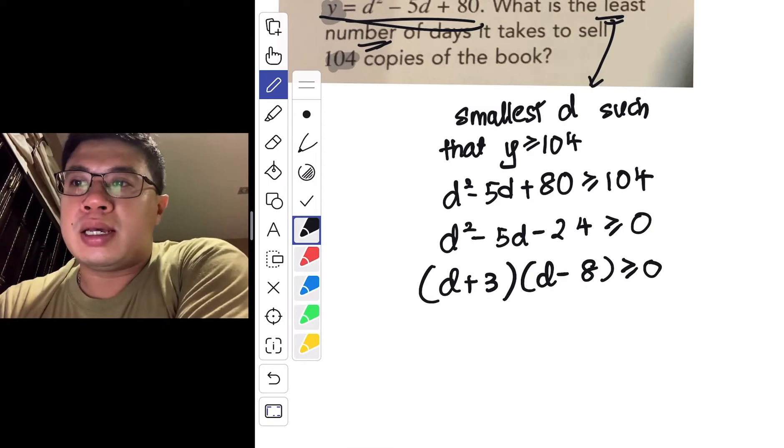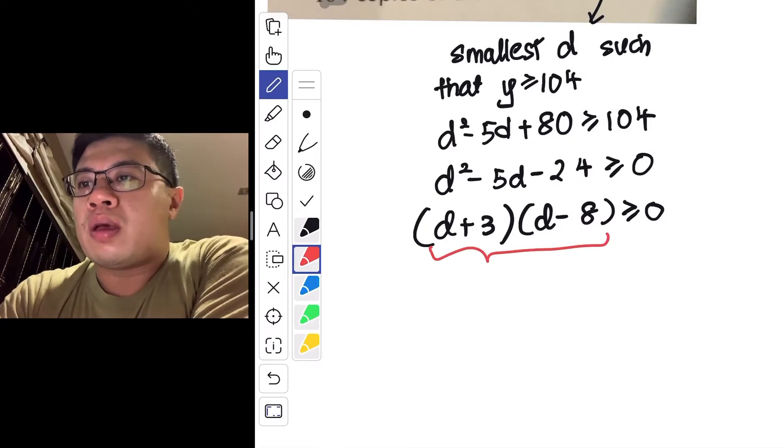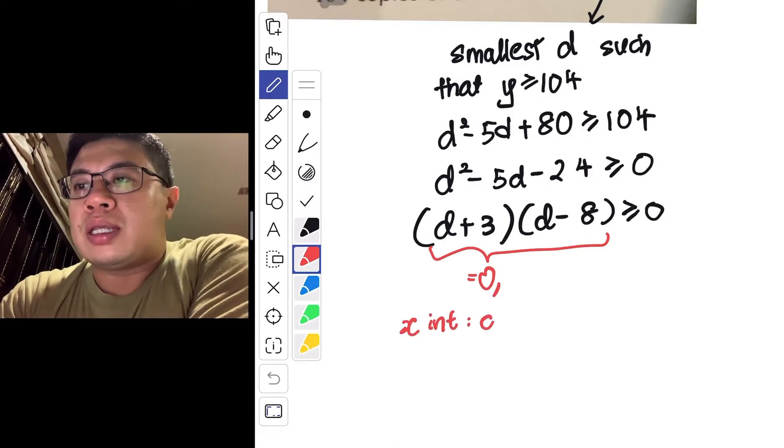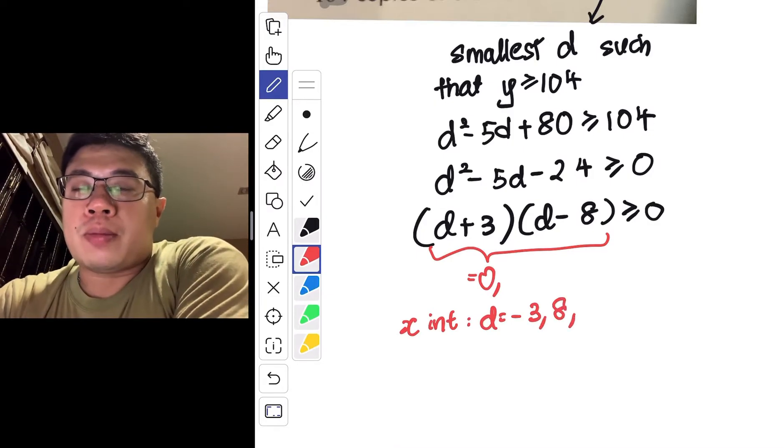I'm trying to find the x-intercepts. So if I want to equate this portion to 0, you will find that the x-intercepts basically is d equals to negative 3 as well as d equals to 8.